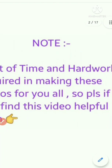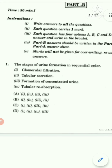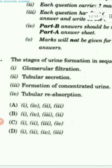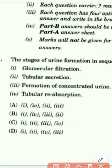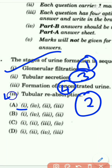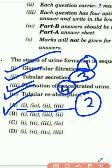Looking at the options, all have glomerular filtration first. The correct sequence is: first glomerular filtration, then tubular secretion fourth, then second, then third — so the answer is Option A for the first question.